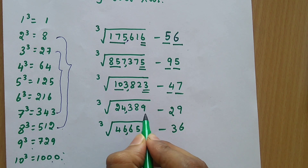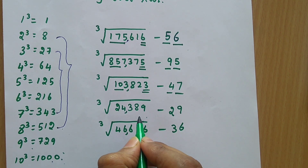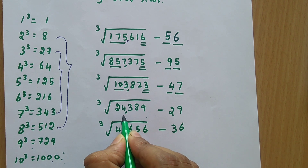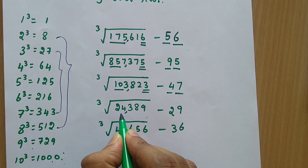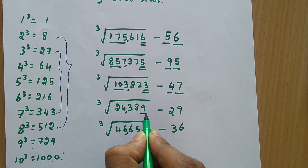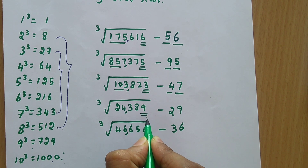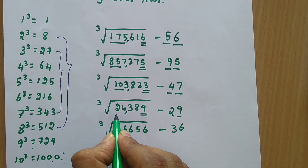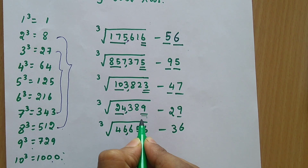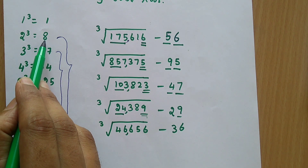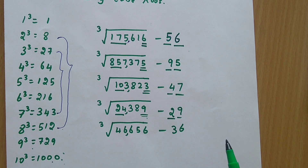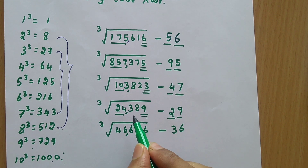Here we have a 5-digit number. For a 5-digit number, you follow the same protocol: from the last, divide into 3 digits, and in front you have a 2-digit group. Here the last digit is 9 — if the last digit is 9, you mark the same number as the unit digit. Similarly, you look at the perfect cube below 24. The perfect cube below 24 is 8, and the corresponding cube root is 2. Mark 2 as the tens digit. So 29 × 29 × 29 gives you 24389.